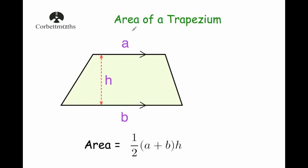In this video we're going to look at how to find the area of a trapezium. A trapezium is a quadrilateral with one pair of parallel sides. The key measurements are a and b, the two parallel sides, and h, which is the height — the distance between the two parallel sides. The area formula is: one half, bracket a plus b, close bracket, times the height. In other words, add together the lengths of the two parallel sides, halve that, then multiply by the height.